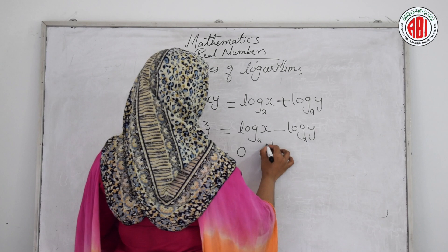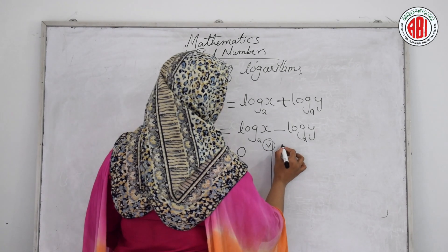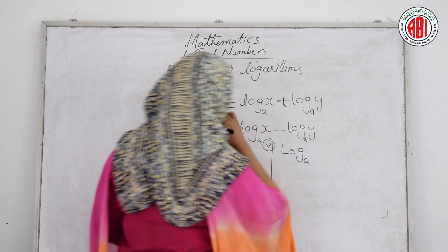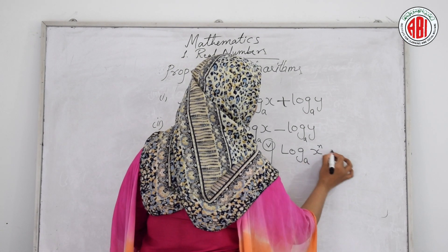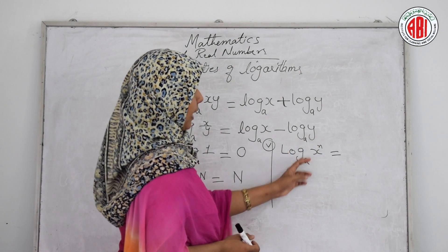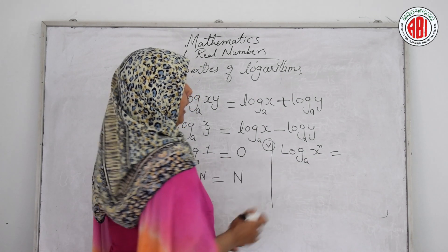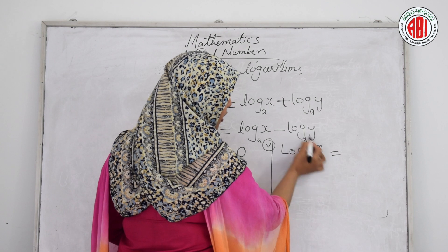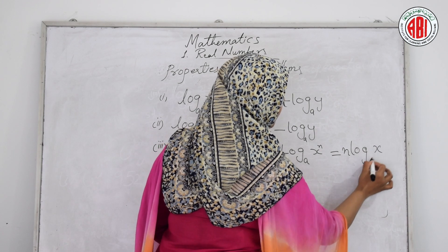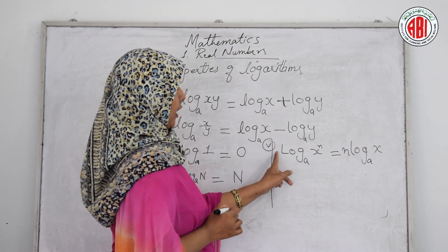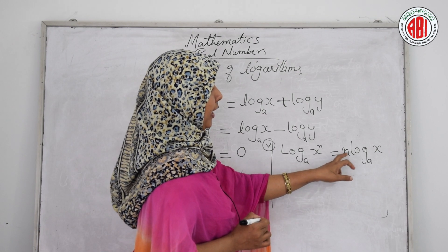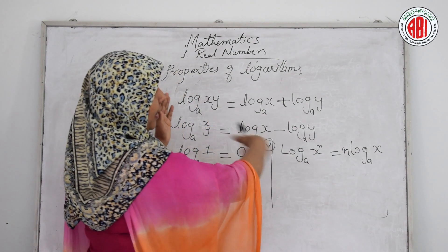The fifth property: log base a of (x to the power n) equals n times log x base a. The exponent n can be shifted out in front. So log_a(x^n) = n·log_a(x). This property was also used in previous questions.